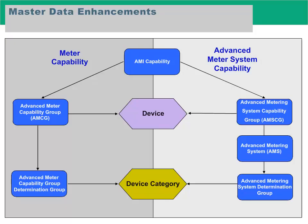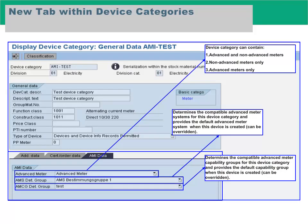This slide shows how meter capability and advanced meter system capability are linked and passed on to device category, and from there to device when a device is created using that device category. This screenshot shows how device category looks like for smart meters. The AMI data tab has three main value fields. Device category can contain advanced and non-advanced meters, non-advanced meters only, or advanced meters only. It determines the compatible advanced meter systems for this device category and provides the default advanced meter system when this device is created — which can be overridden. It also determines the compatible advanced meter capability groups for this device category and provides the default capability group when this device is created — can be overridden.